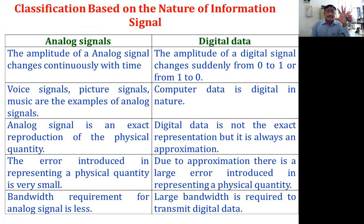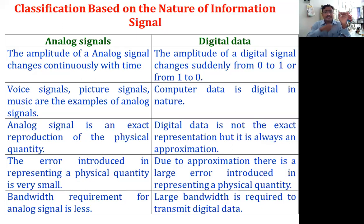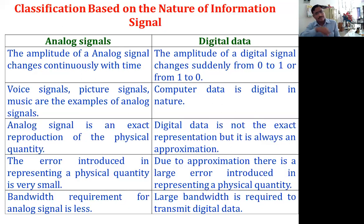This screen shows the comparison between analog and digital signals. The major difference is that an analog signal varies continuously with time, whereas the amplitude of a digital signal changes suddenly or discretely. In a digital signal, it suddenly becomes one, then zero — there is no step between zero and one, so there are discrete or sudden changes in amplitude.